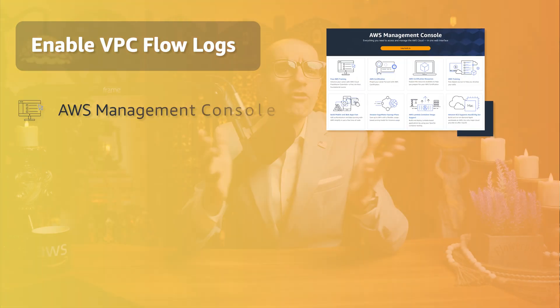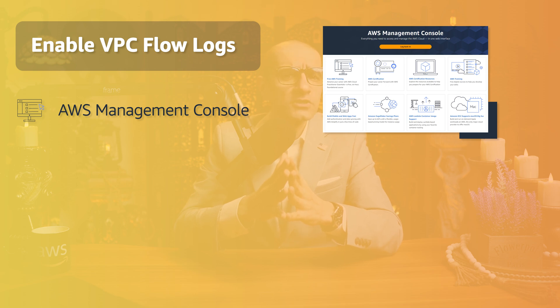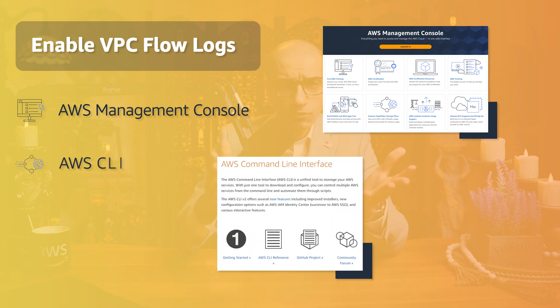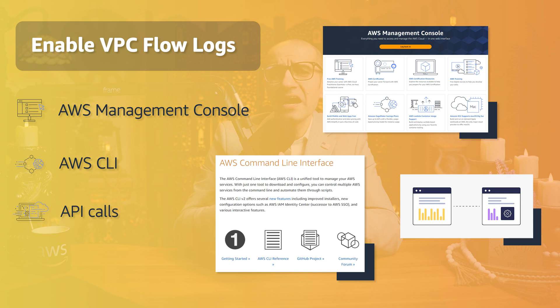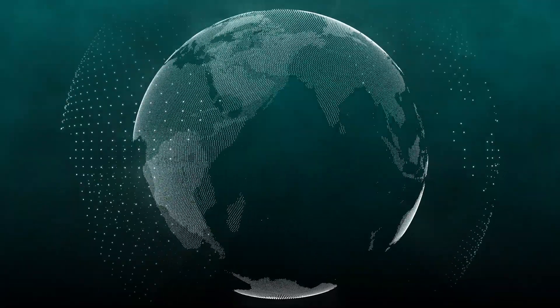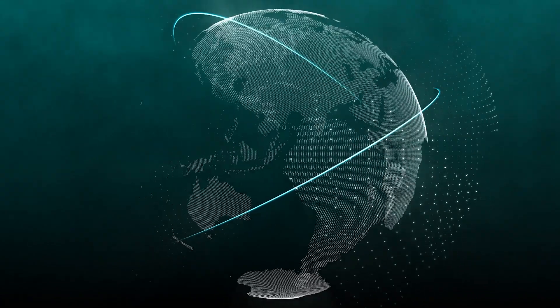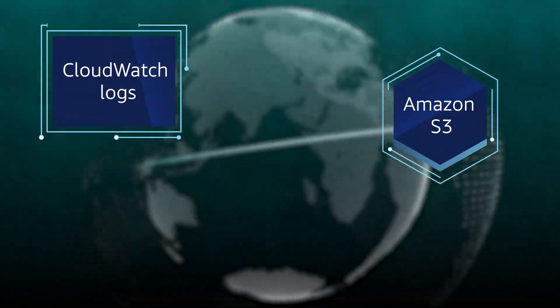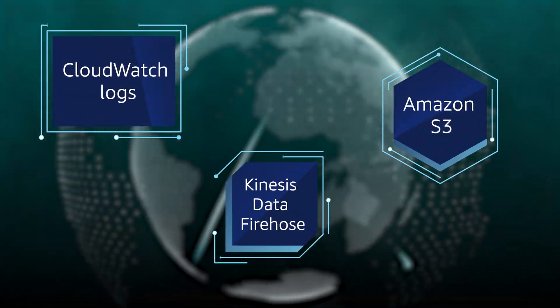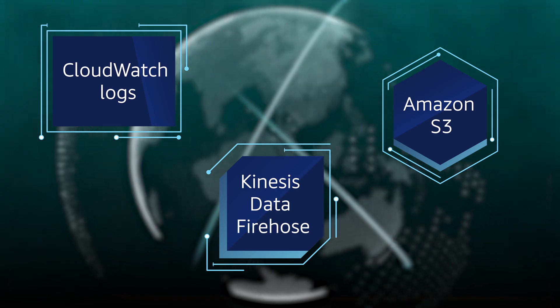Number one, you can enable VPC flow logs from the AWS management console, AWS CLI, or by making simple API calls. Once enabled, relevant network traffic can be published to CloudWatch Logs, Amazon S3, or Kinesis Data Firehose.